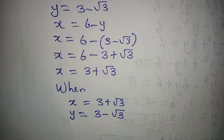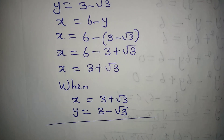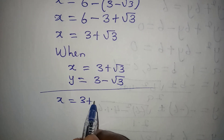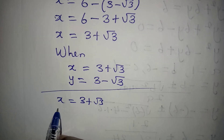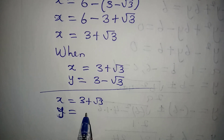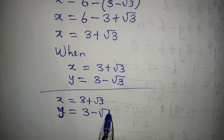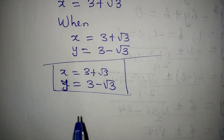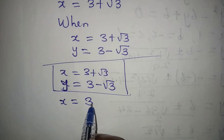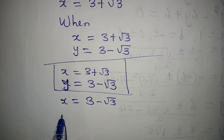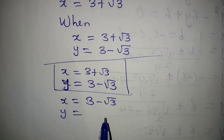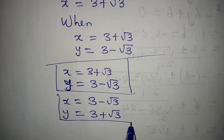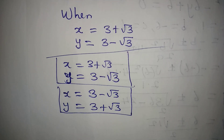Bringing the values together: x equals 3 plus root 3 and y equals 3 minus root 3, or x equals 3 minus root 3 and y equals 3 plus root 3. These are the values of x and y that satisfy the given equations.